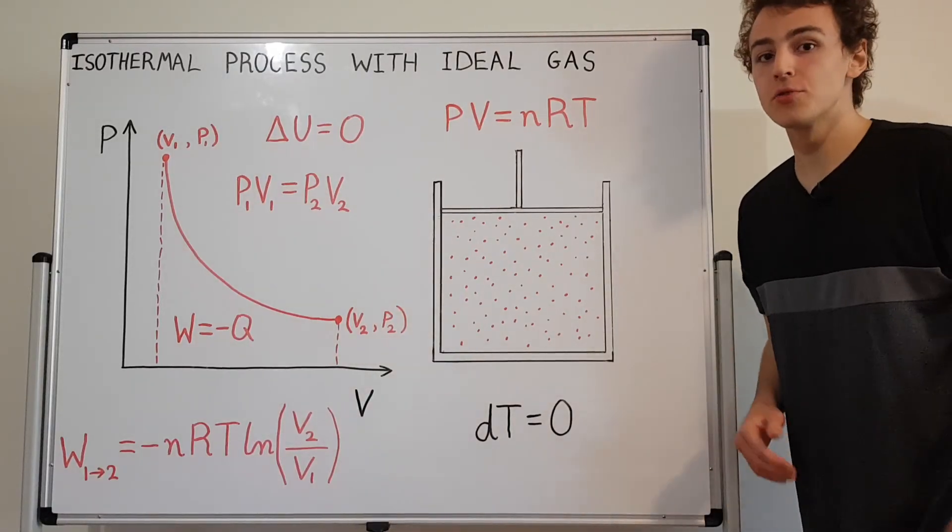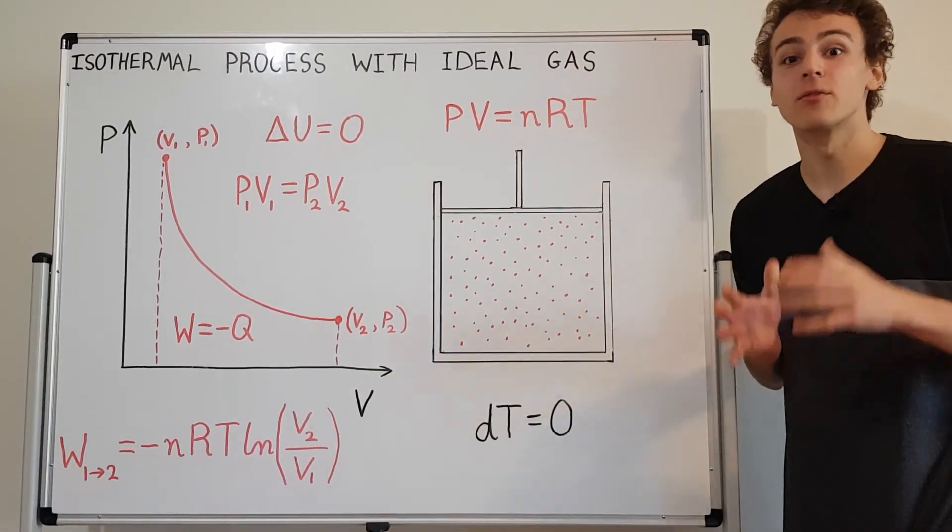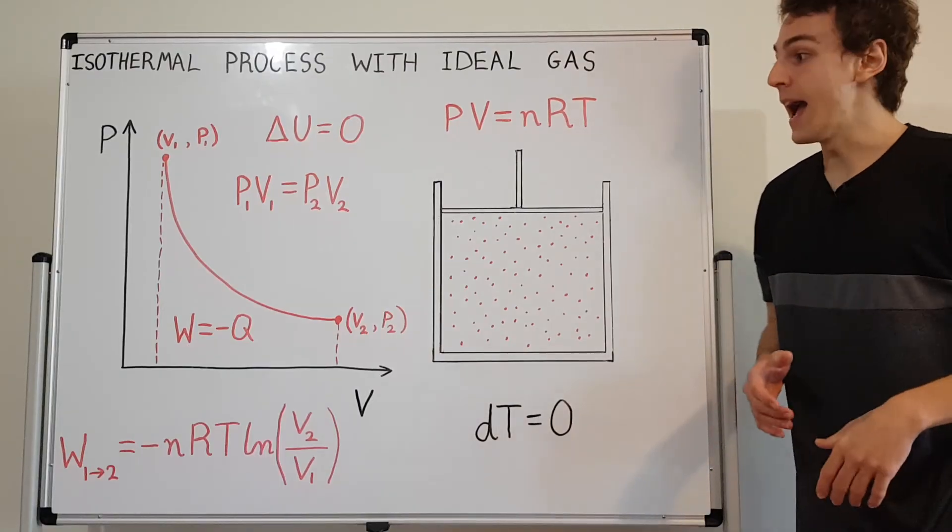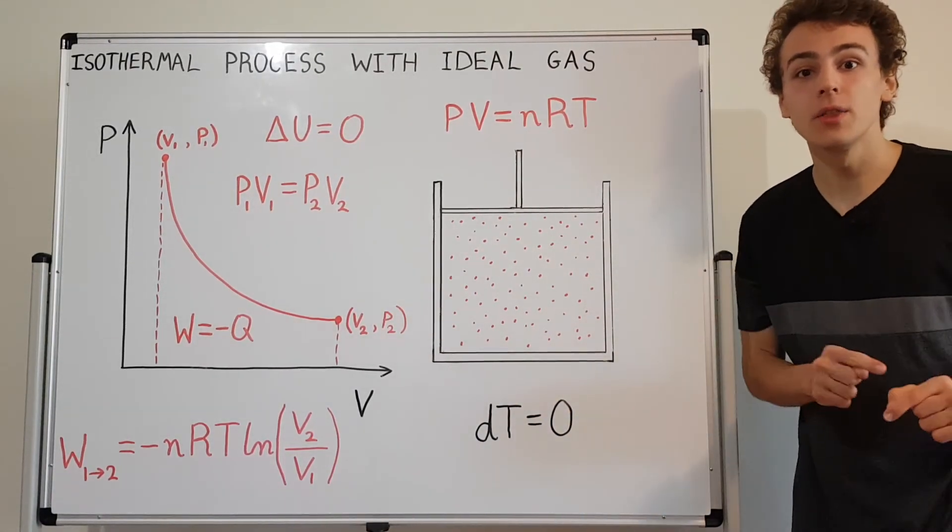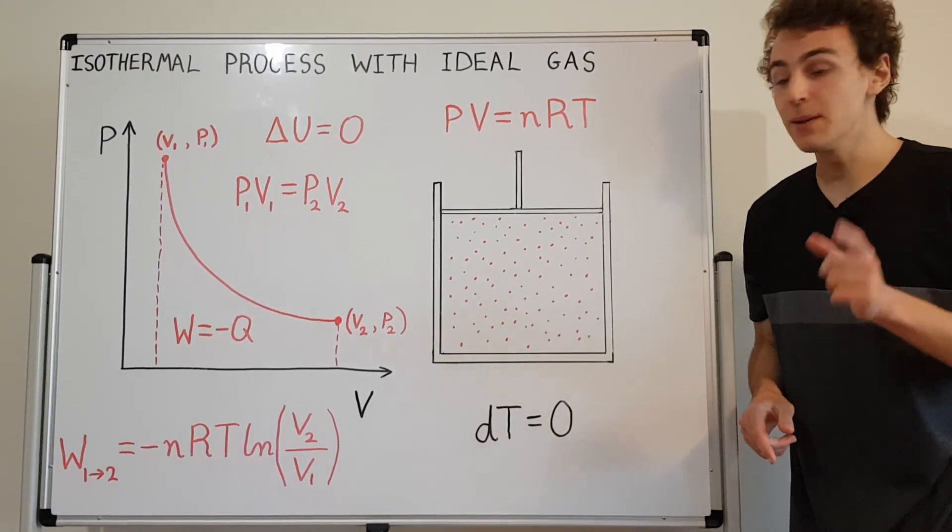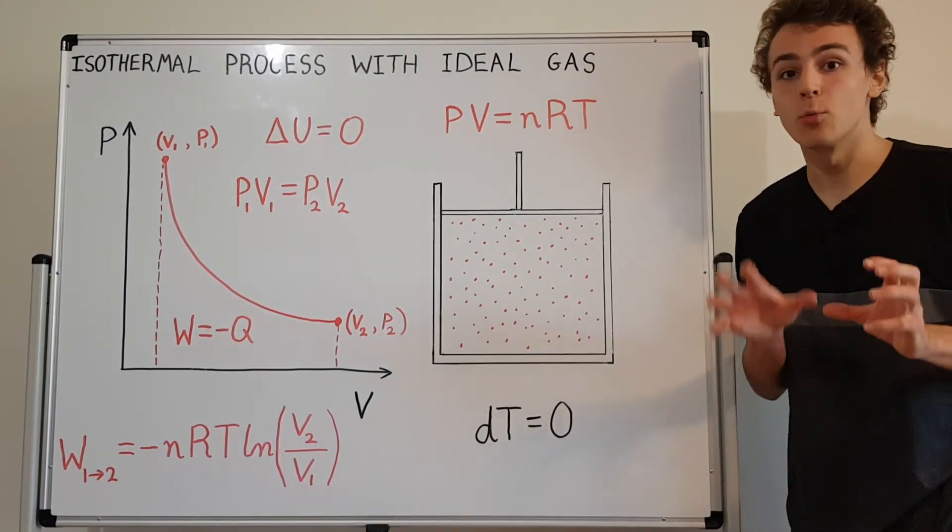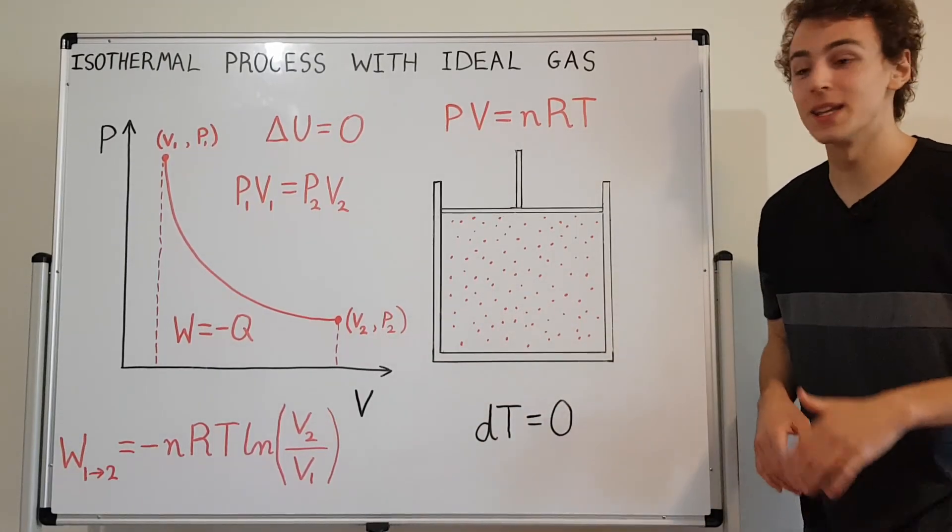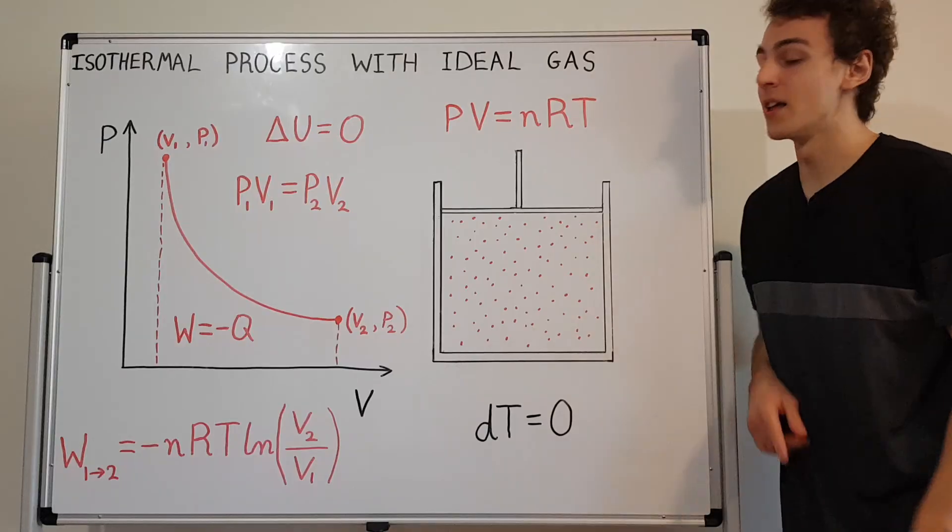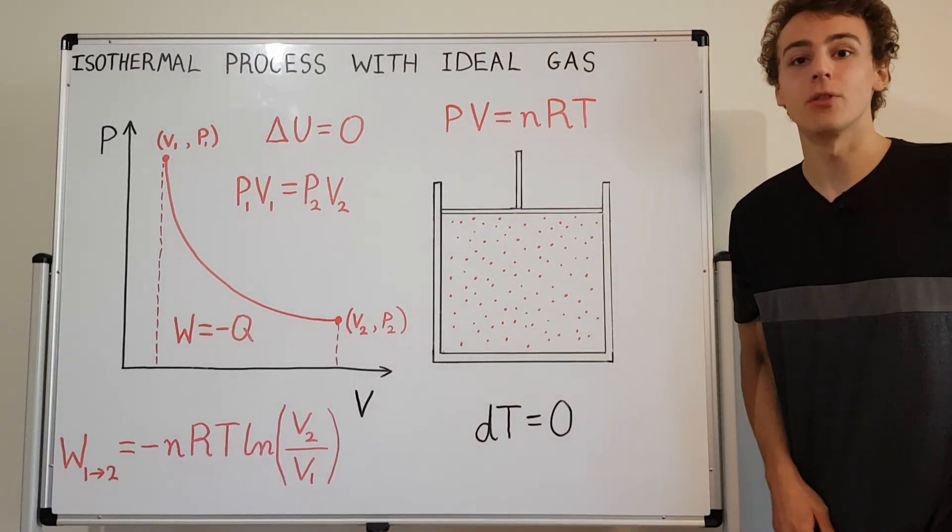So the takeaway message from this video is isothermal processes have constant temperature, and they can be represented as rectangular hyperbolas on the PV diagram. And keep in mind, the heat and the work have to conspire together to keep the internal energy constant so that the temperature remains constant. That is the condition for an isothermal process.